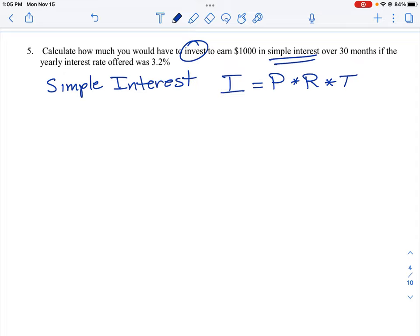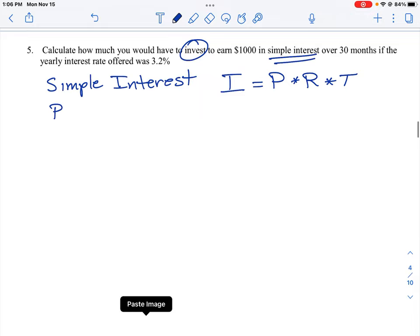Let's just write out what these numbers are that we can find for these variables here. So we need to know, calculate how much you would have to invest. That means we have to know the principal. That's what we're being asked to find. So the principal is the question mark. We know the interest being earned is $1,000 or 1,000 units.